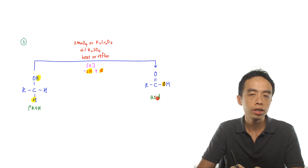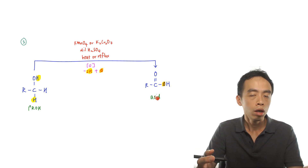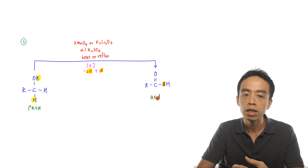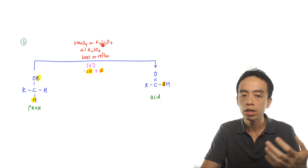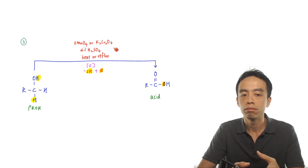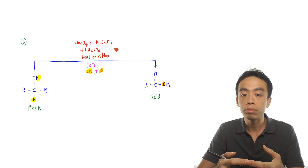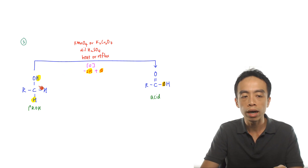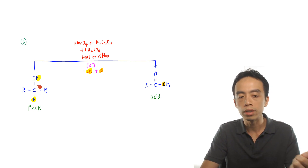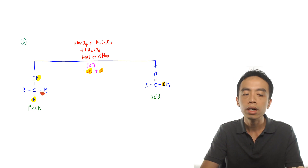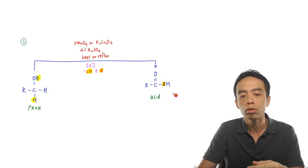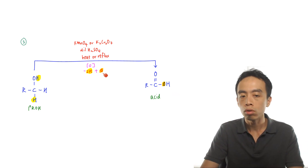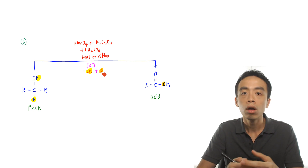Reaction 3 is oxidizing primary alcohol all the way to carboxylic acid — we simply don't try to protect or prevent the aldehyde from further oxidation. We can use permanganate or dichromate in dilute H₂SO₄ with heating or reflux. This is an oxidation because we lose two hydrogens (from carbon and oxygen), form a double bond between carbon and oxygen, and add an oxygen — losing hydrogen and adding oxygen confirms it is oxidation.